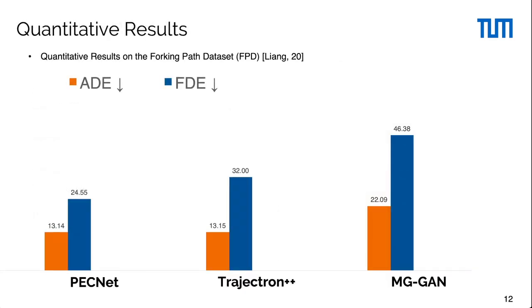Using real trajectory data for evaluation has limits because it only has one ground truth trajectory for a single observation. We therefore evaluate our method on the forking path dataset that provides multiple human annotated realistic future trajectories for a single observation.